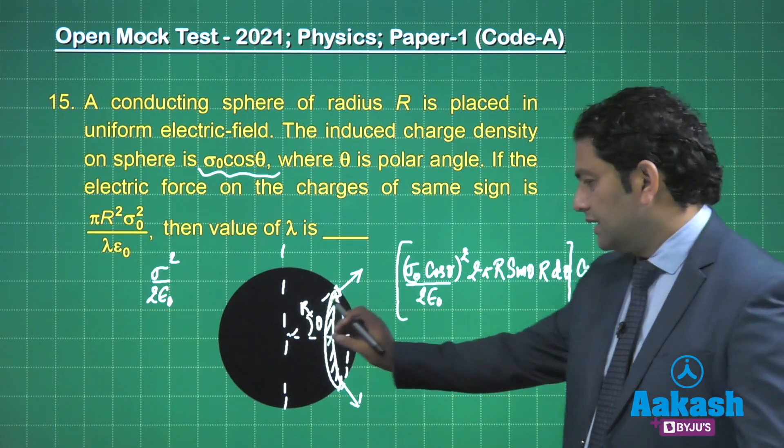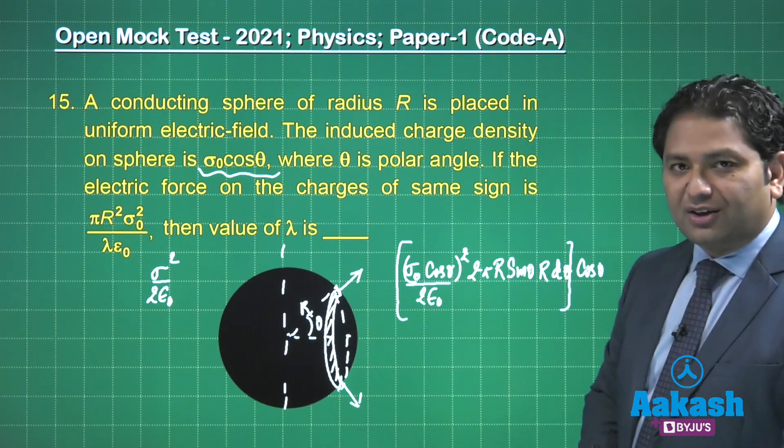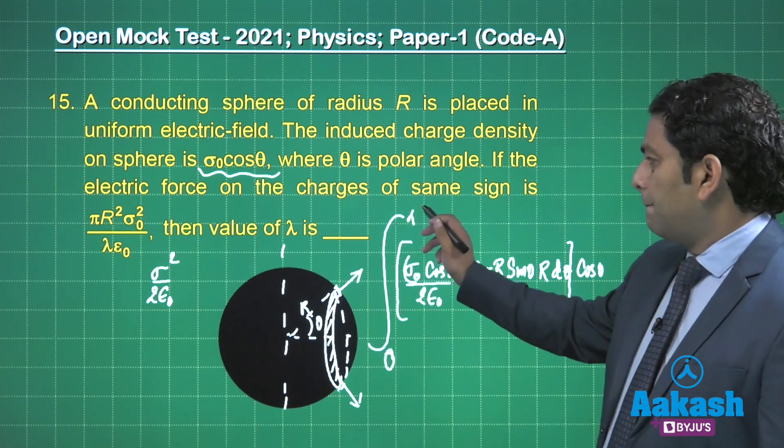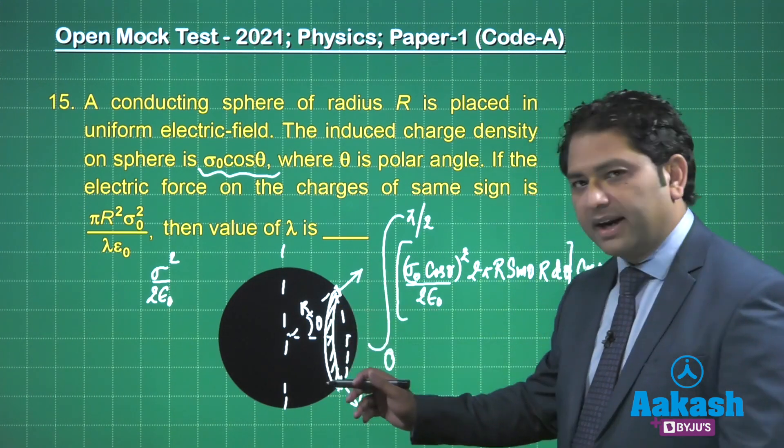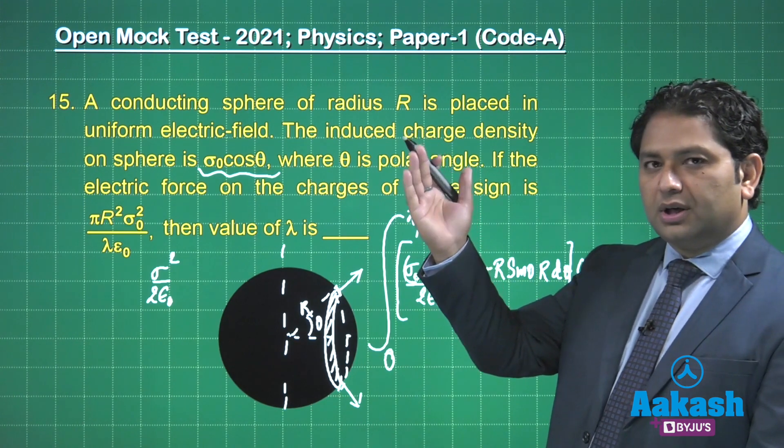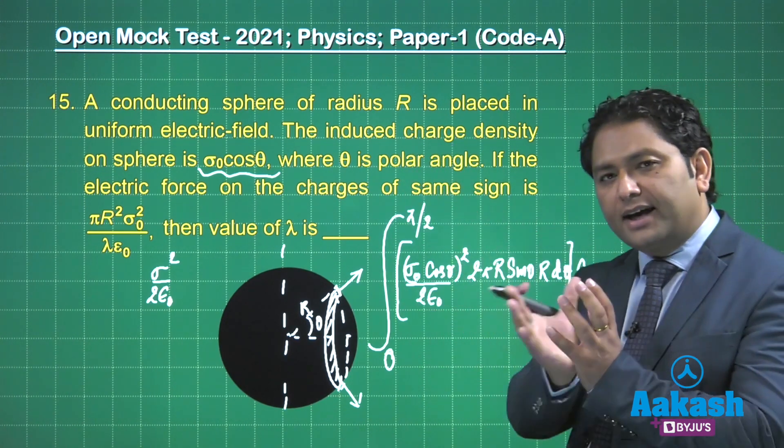This gives the expression of force and the integration limit will be 0 to π/2. Why? Because the elementary quantity is the ring, so as θ increases from 0 to π/2 the ring will cap the entire surface.